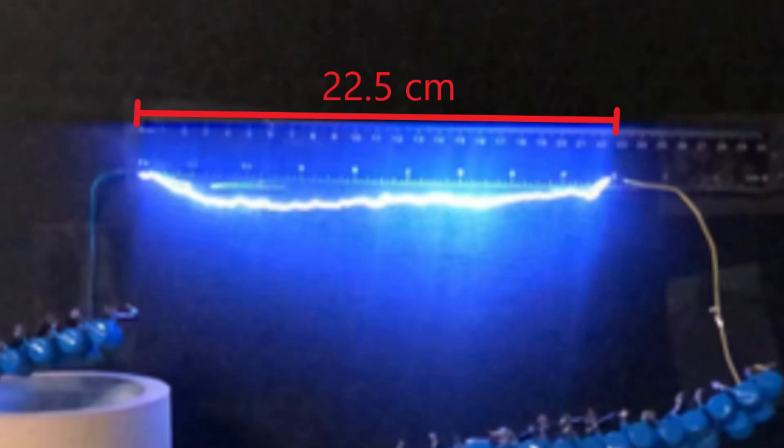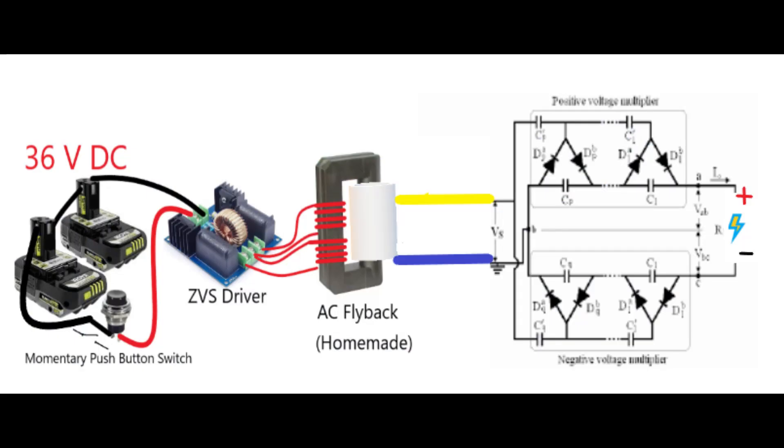I promise to bring you bigger arcs in the future, which can definitely be done by using better components in the ZVS circuit that are rated for higher input voltages. Now let me show you how I was able to generate such a high voltage.